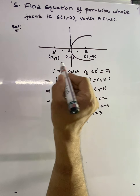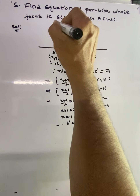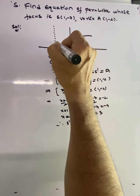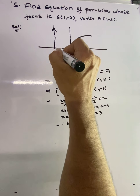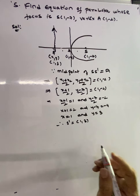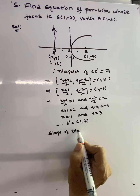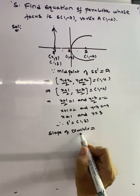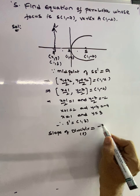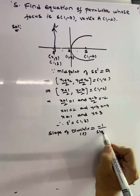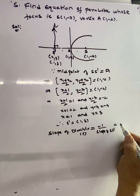Once we have S' = (1, 3), we need to find the directrix — the line passing through S'. To find this line we need a point and a slope. We have point S', so we need to find the slope of the directrix, since the directrix is perpendicular to the line SS'.